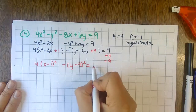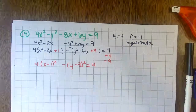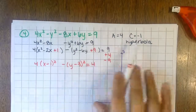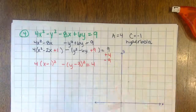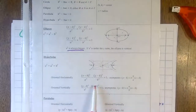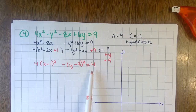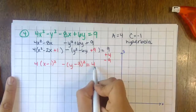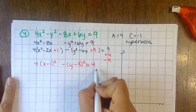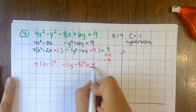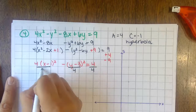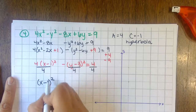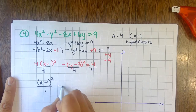That equals four. But this needs to equal one for standard form, so divide everything by four. The x² term becomes x minus one squared over one, and the y² term reduces — divide through to get the standard hyperbola form. Make sure you finish dividing every term so the right side equals one.